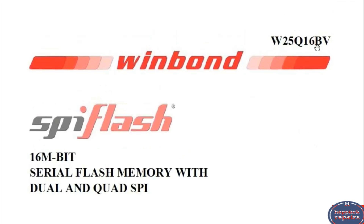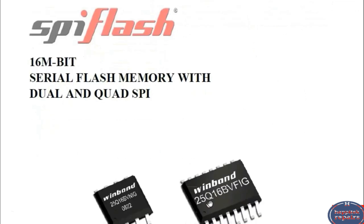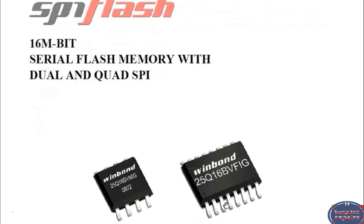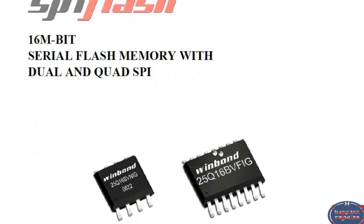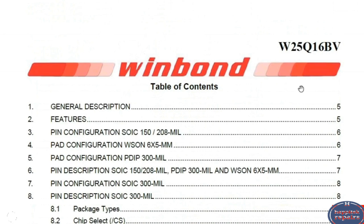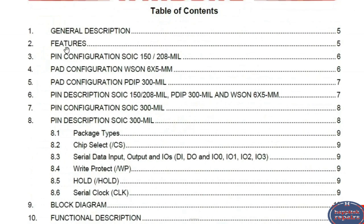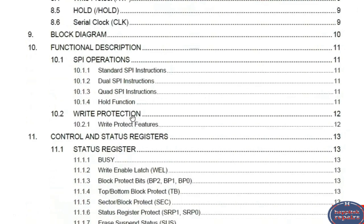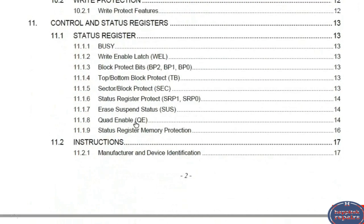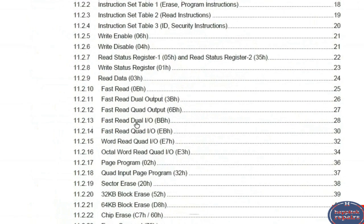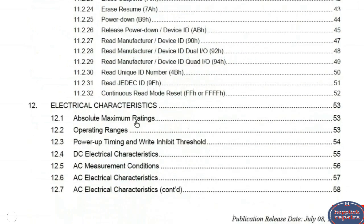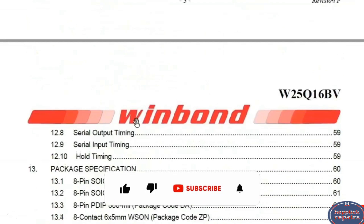We now have the PDF file downloaded. This is a 16 megabit serial flash memory. Here we have the table of contents where you can look for anything you want to read about the BIOS chip, including the pin configuration, the characteristics, and so on.